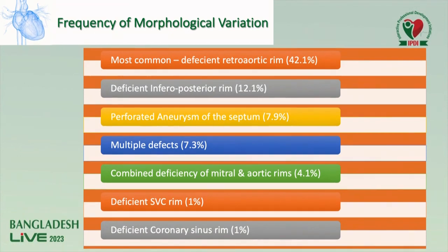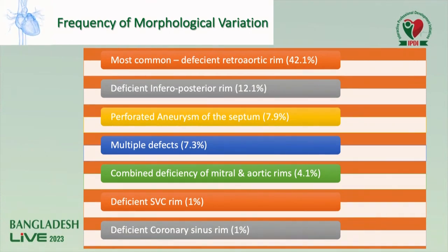Morphological variations of deficient rims: most common is retro-aortic rim at 42%, inferior posterior rim at 12%, perforated aneurysm of the atrial septum at 8%, multiple defects at 7%, combined deficiency of mitral and aortic rim at 4%, and deficient SVC rim and coronary sinus rim at 1%.